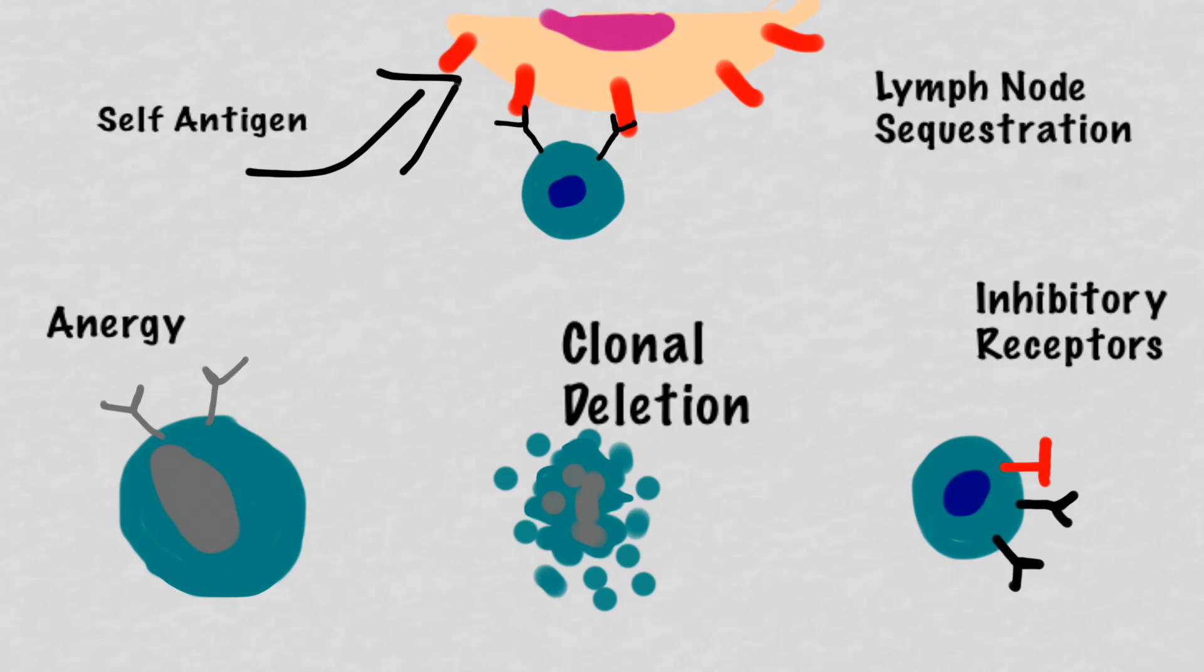First, just like in T-cells, the B-cell may become anergic or unable to respond or see antigen. It also may be deleted in a process known as clonal deletion, where it will undergo apoptosis as a result of signals it receives that basically induce it to kill itself.